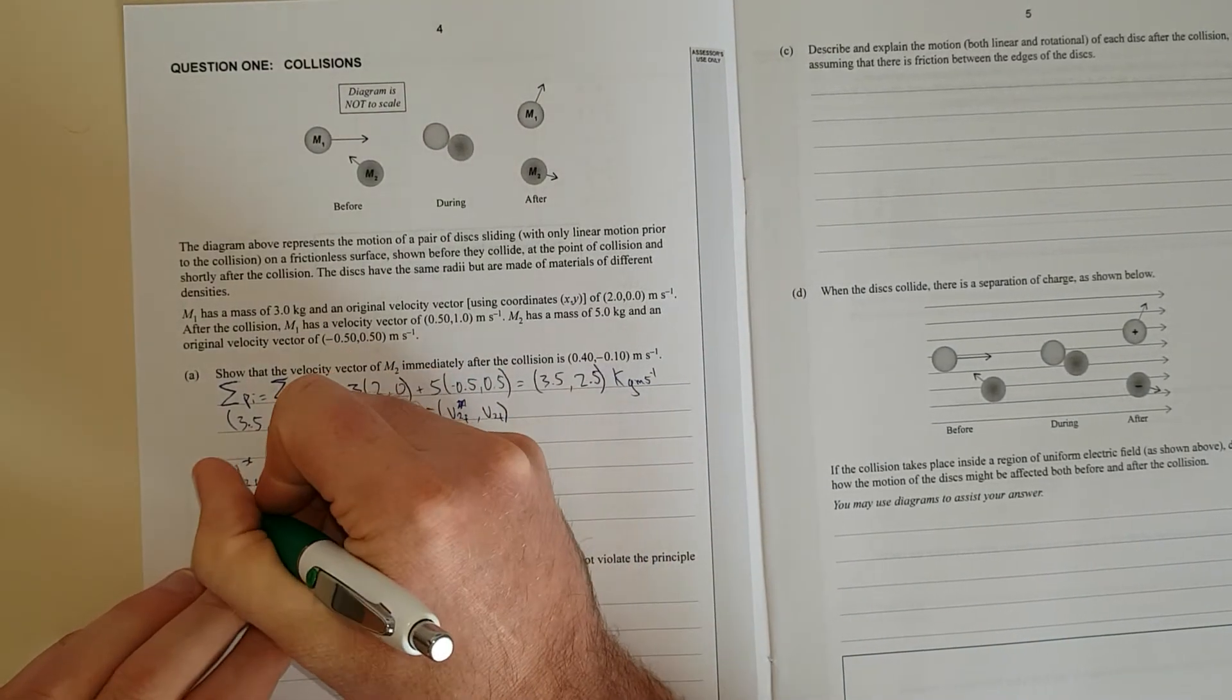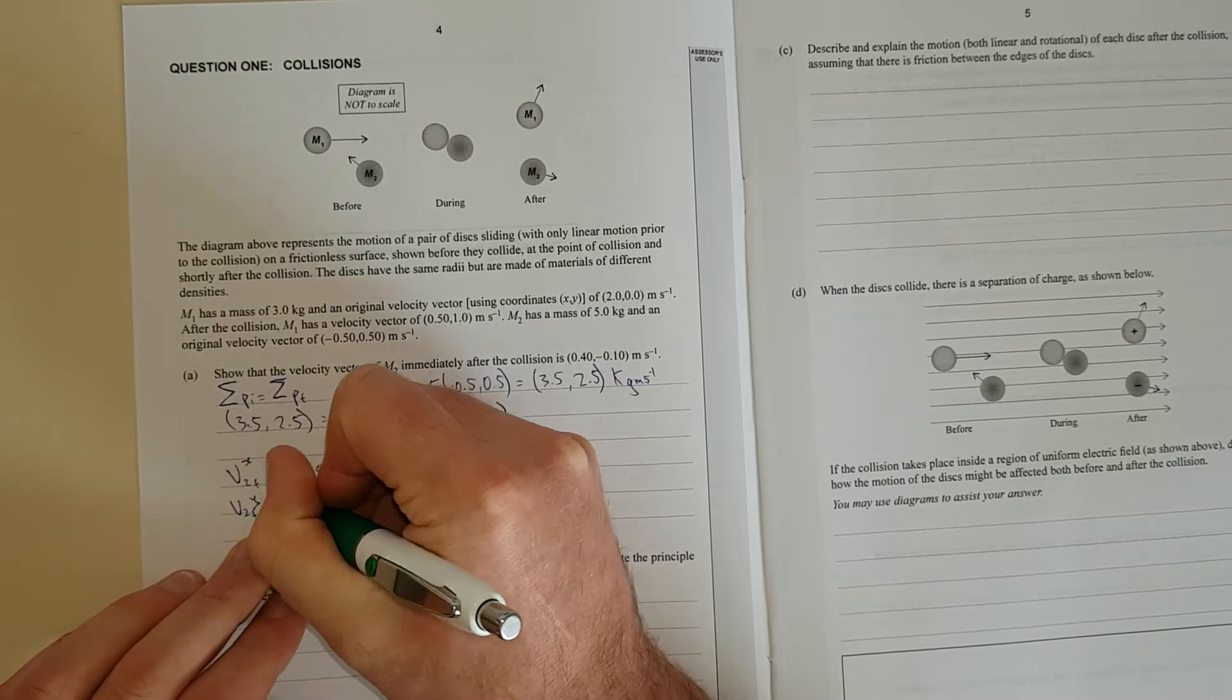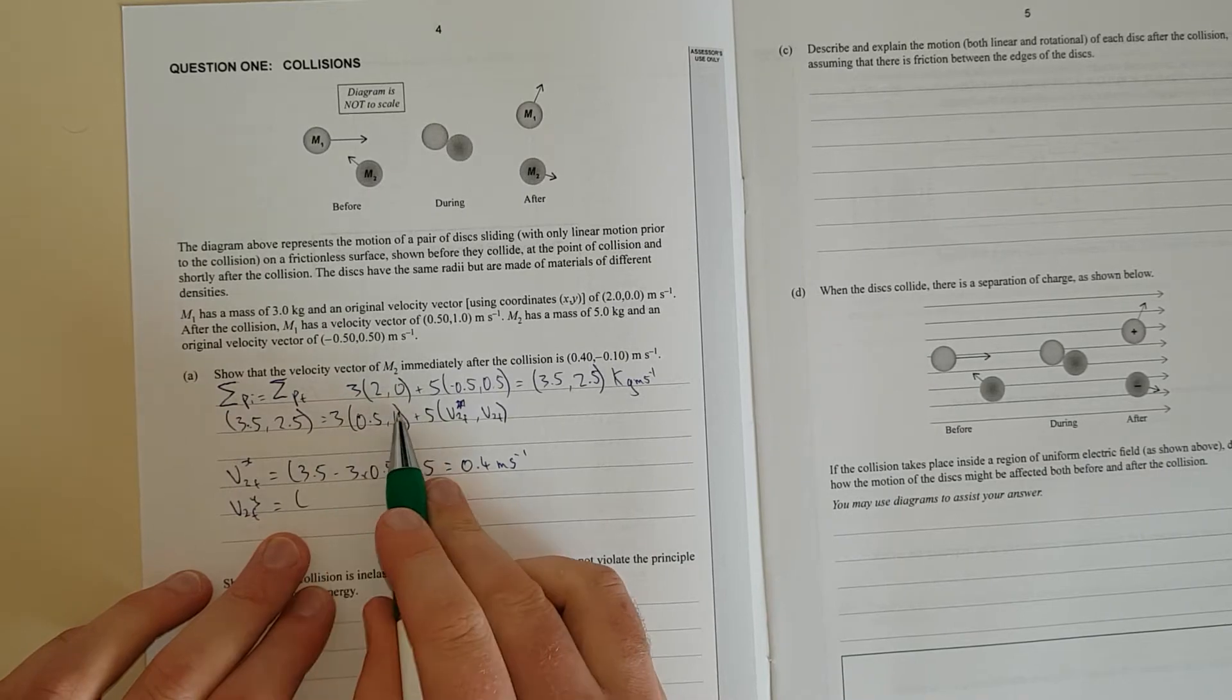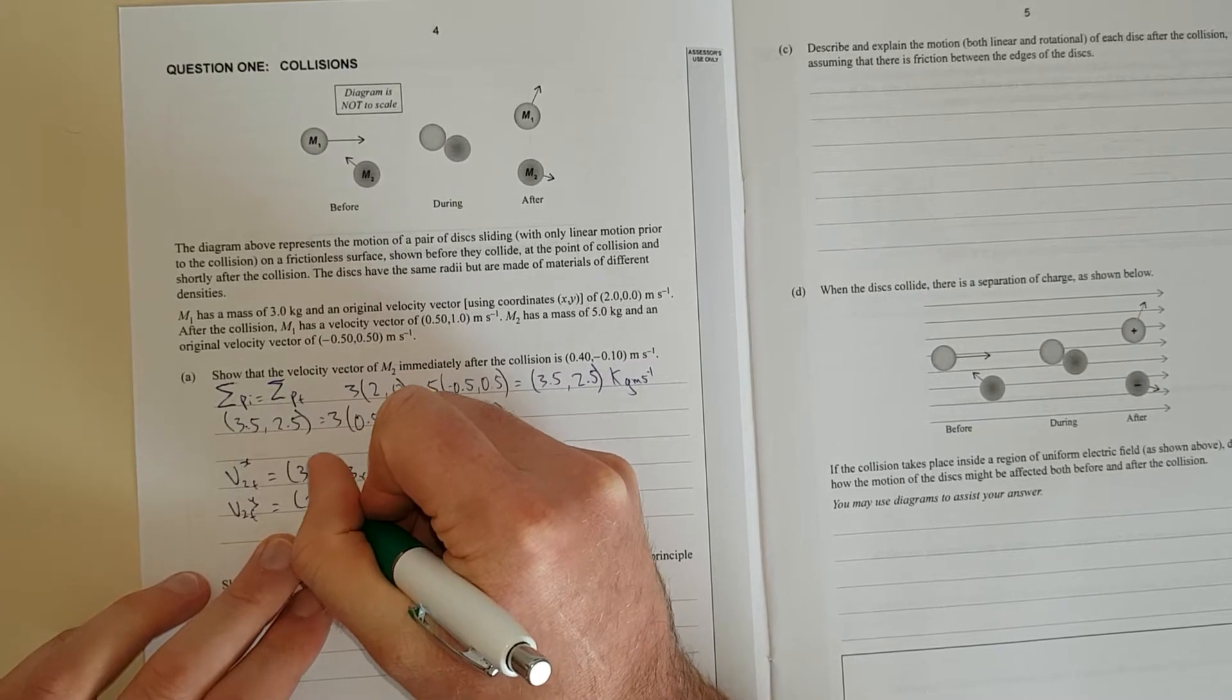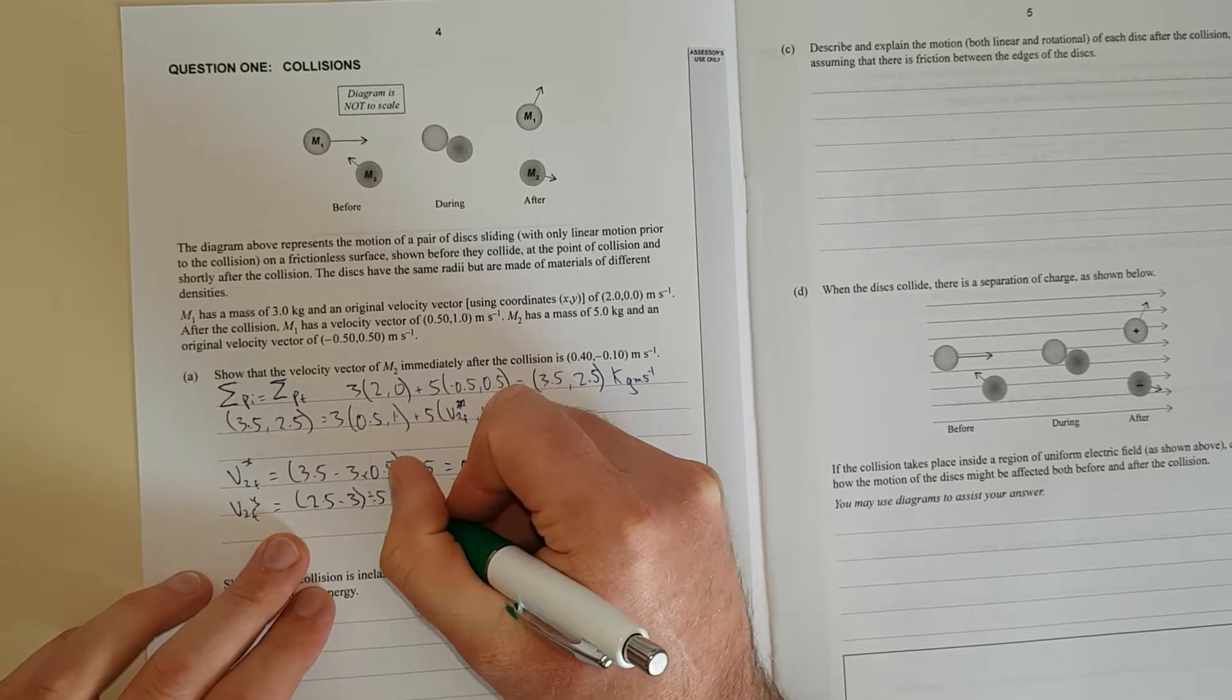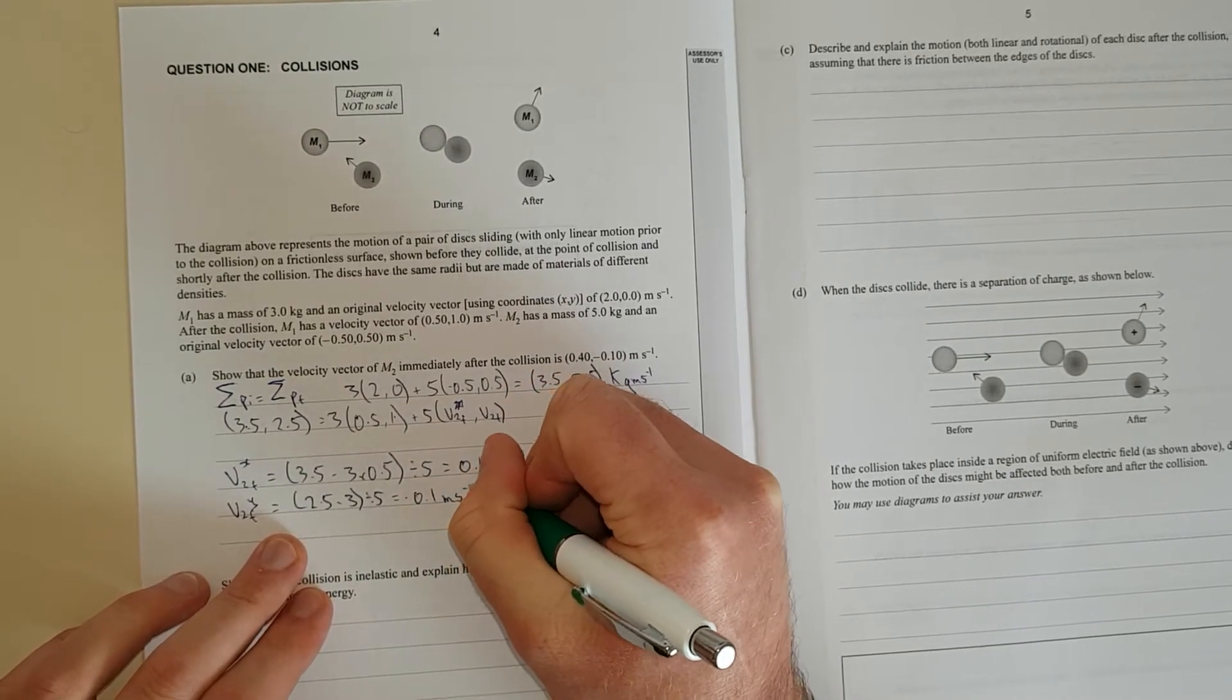And then we get v2f in the y direction, and that is equal to 2.5 minus 3 times 1, divided by 5, to get that vf. So it'll be 2.5 minus 3, divided by 5, and that equals negative 0.1 metres per second.